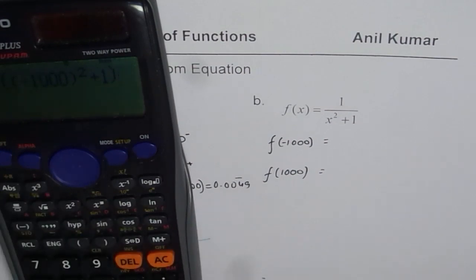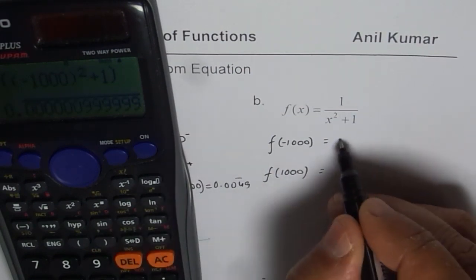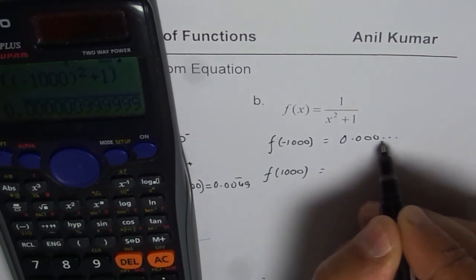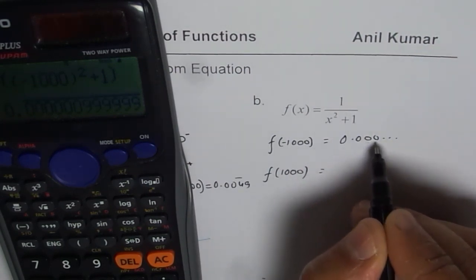So this bracket is for the outside term, and that gives you a number which is very, very small, but positive. Do you see that 0.000 something, but it is positive. So you kind of get it. It approaches 0.